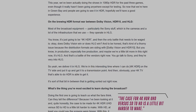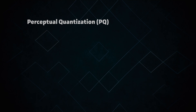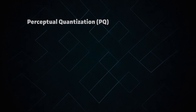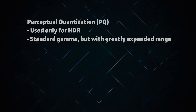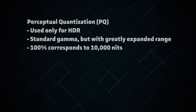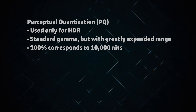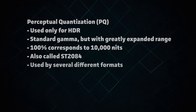However, there is a downside to this approach as well. While HLG is backwards compatible, the HDR experience it offers isn't that impressive compared to other HDR formats out there. That brings us to the other type of HDR: perceptual quantization. Perceptual quantization, or PQ, is another method of encoding an HDR signal. It uses a more typical gamma curve, but with a greatly expanded luminance range. In PQ, 100% corresponds to 10,000 nits instead of just 100 nits. The most common PQ curve is called ST2084. There are several different formats which utilize PQ, which we'll go over in a moment, but first we need to talk about tone mapping.